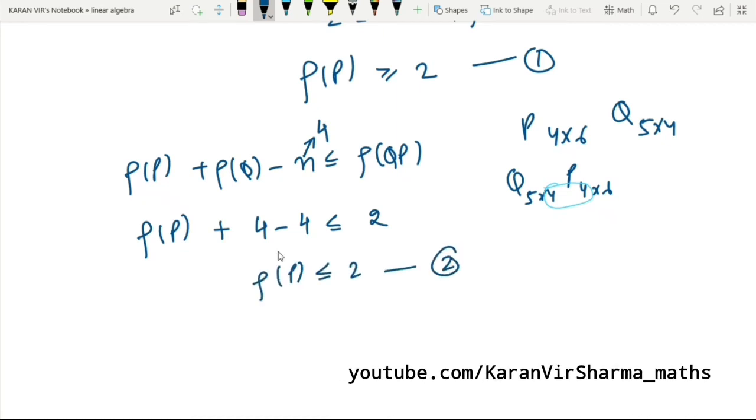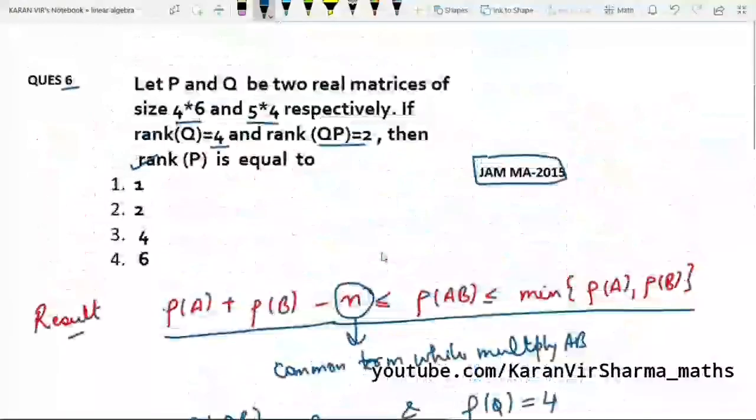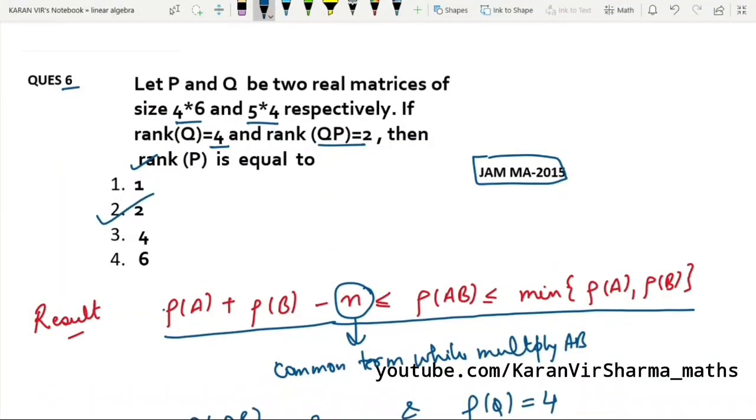So from here we have two equations: rank of P less than equal to 2 and greater than equal to 2. So what does it imply? That rank of P is 2. So you can go into the options and choose the right option. I hope you understood this question. Thanks for watching the video.